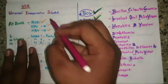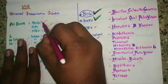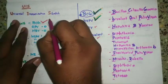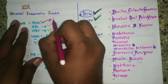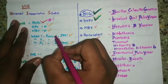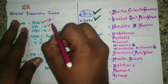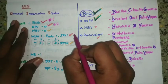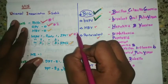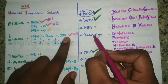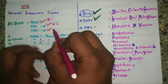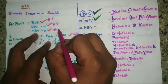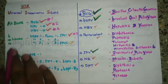Let's begin. We will discuss BCG as the first video in this vaccination series. Second, OPV. The third video in the vaccination series, we will discuss IPV. Fourth, we will discuss HBV.